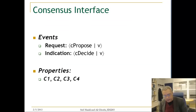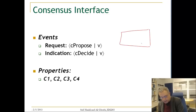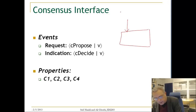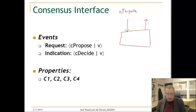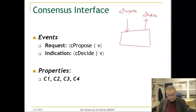Let us see the interface. The interface has two events: a request event which is C-propose a value, and an indication event which is the decide event C-decide. We have the properties that we discussed before: validity, integrity, agreement, and termination.